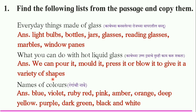Three names of colors of glass: blue, violet, ruby red, pink, amber, orange, deep yellow, purple, dark green, black, and white.